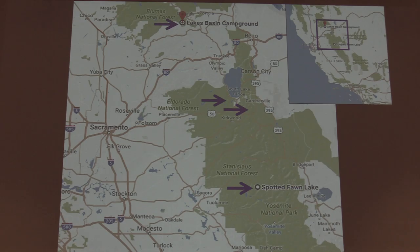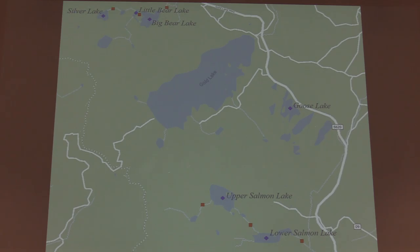My study site was located in California, primarily in Sierra Nevada and primarily at Lakes Basin. I also took some contextual information from sites like Tamarack Lake, Cottonwood, and Spotted Farm. Zooming into the Lakes Basin sites, you have Silver, Little Bear, and Big Bear lakes, which are all part of the Feather River watershed. Then there are the Salmon Lakes, part of the Yuba River watershed, and I also sampled the Goose Lakes. The blue represents lakes and the orange represents stream sampling.